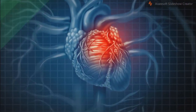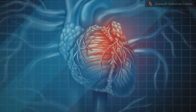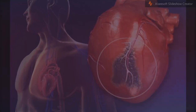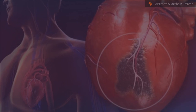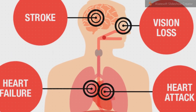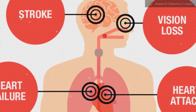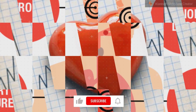Myocardial infarction (MI) refers to tissue death (infarction) of the heart muscle (myocardium) caused by ischemia — that is, lack of oxygen delivery to myocardial tissue. It is a type of acute coronary syndrome, which describes a sudden or short-term change in symptoms related to blood flow to the heart.